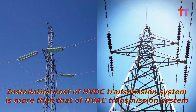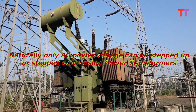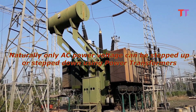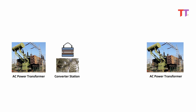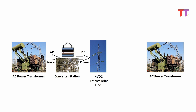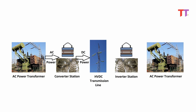Capital cost: Installation cost of HVDC transmission system is more than that of HVAC transmission system, because naturally only AC power voltage can be stepped up or stepped down using power transformers. Hence for HVDC transmission, we have normal HVAC power transformers at both ends. Then there is a converter station at the sending end which converts stepped-up AC power into DC power. This DC power is transmitted over distance by DC transmission lines. At the receiving end, there is an inverter station which converts DC power back into AC power, which can again be stepped up or stepped down using power transformers. These converter and inverter stations increase the capital cost of HVDC power system compared to HVAC.